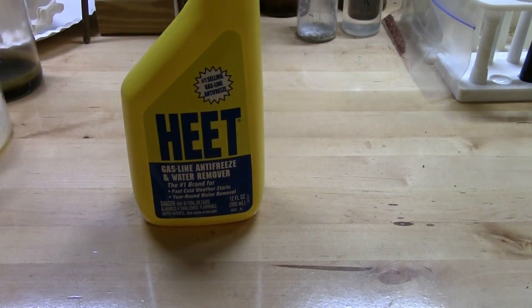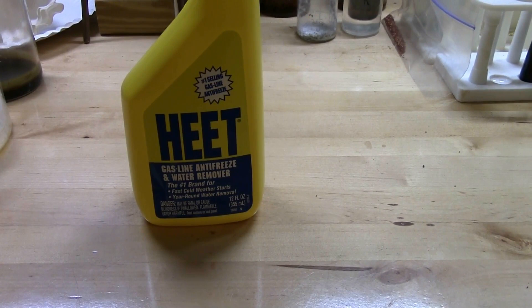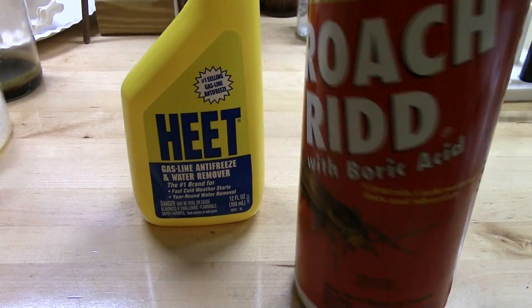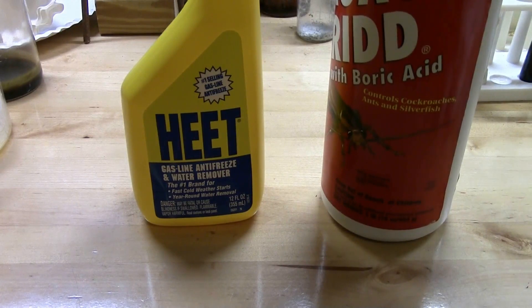It's an antifreeze for your car. Now burning methanol by itself just produces a very pale blue flame which is not very interesting. So I want to spice things up a little bit by adding some boric acid which is this roach killer that I also bought from the hardware store.